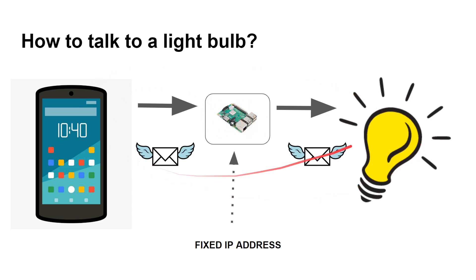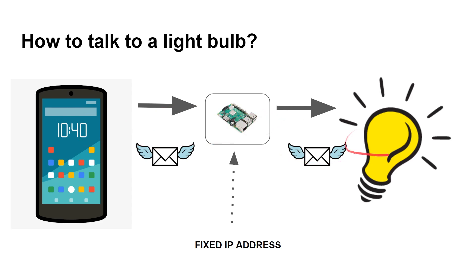Everything else has dynamic IP addresses. But as long as you all know the address of the gateway — the address of this broker — then the messages can get through. The smartphone connects to the Raspberry Pi, the light bulb connects to the Raspberry Pi. It doesn't matter what addresses they've got, as long as they can connect. The Raspberry Pi knows their addresses because they've already said 'we're here,' and then it can start routing the messages between them.